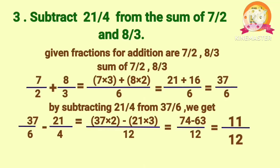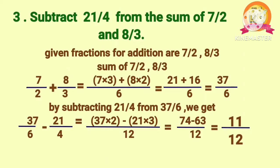Third problem: Subtract 21 by 4 from the sum of 7 by 2 and 8 by 3. First, find the sum of 7 by 2 and 8 by 3. LCM of 2 and 3 is 6, so 7 by 2 plus 8 by 3 equals 37 by 6. Then subtract 21 by 4 from 37 by 6. LCM of 6 and 4 is 12. After subtraction, we get 11 by 12.